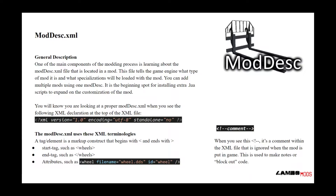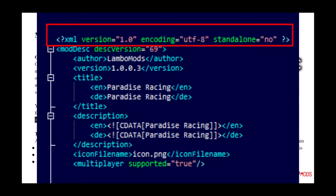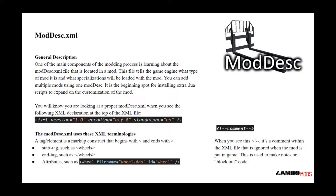You can add extra multiple mods using one moddisk. It is the beginning spot for installing extra Lua scripts to expand on the customization of the mod. You will know you are looking at a proper moddisk when you see the XML declaration at the top of the file. The moddisk uses XML terminologies that we covered in the prior video on what is XML, and it relies on the aspect of the elements and the attribute tags that we talked about there.